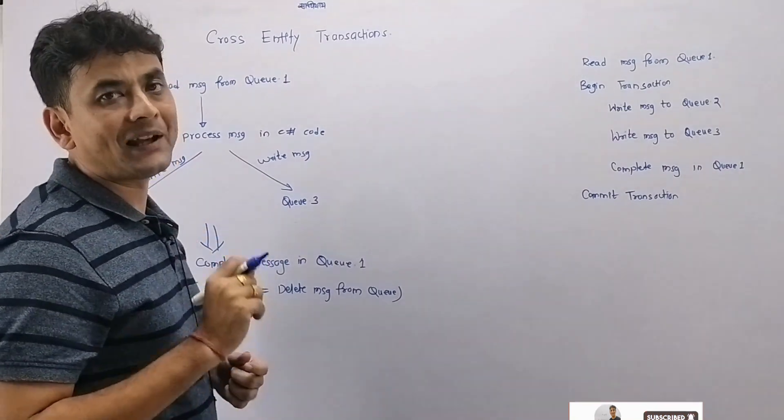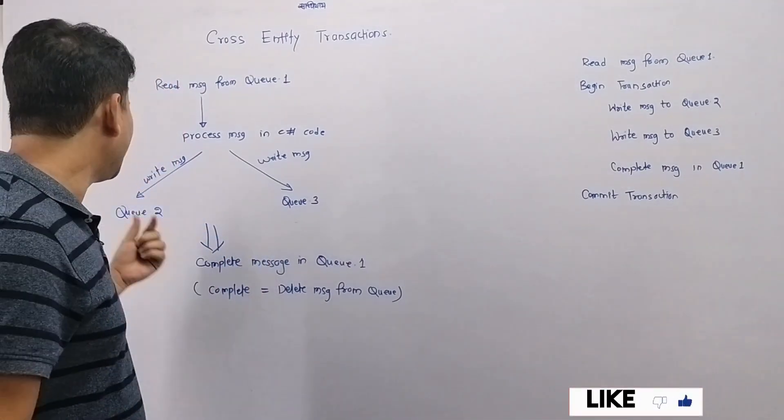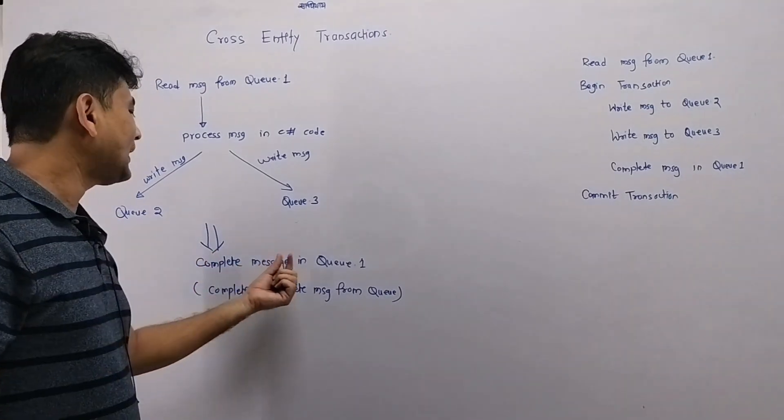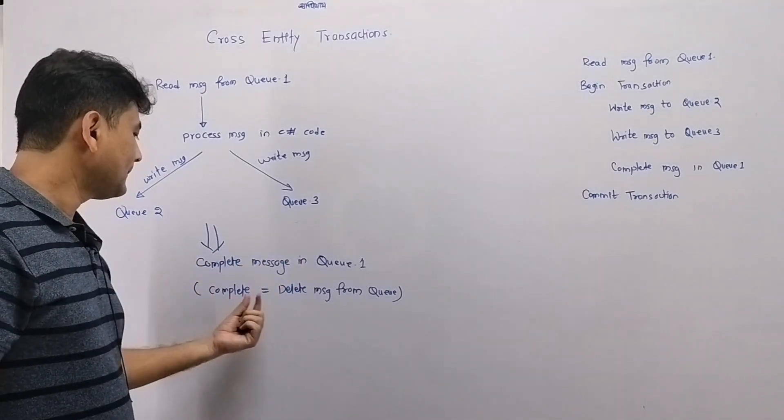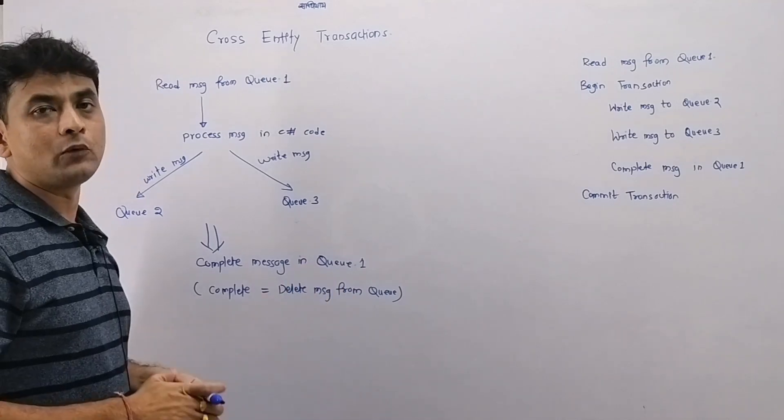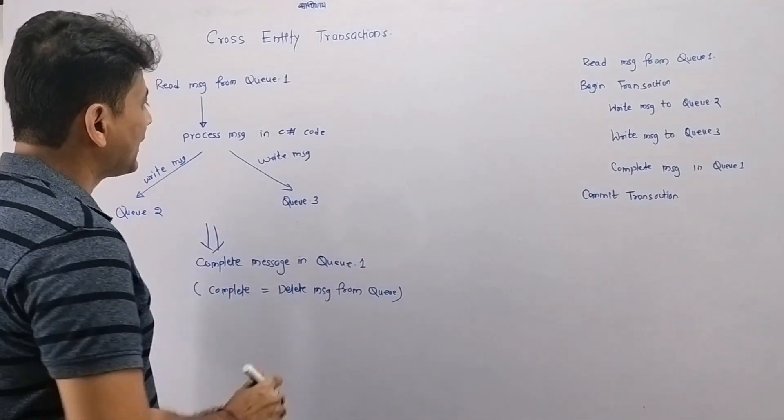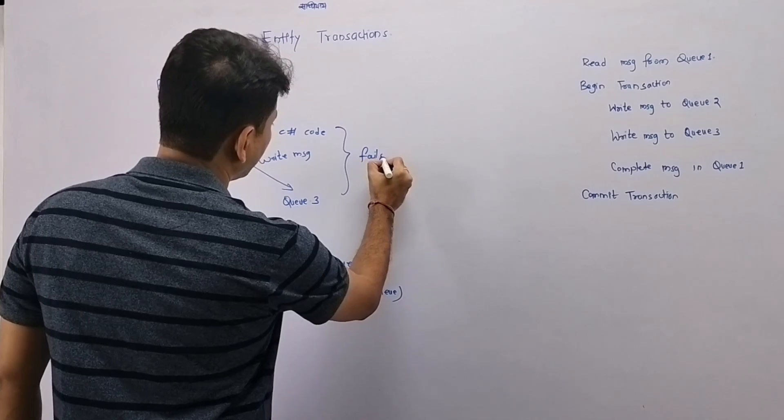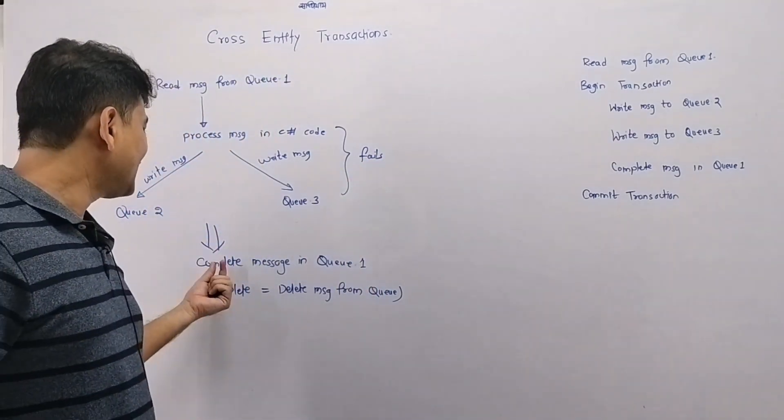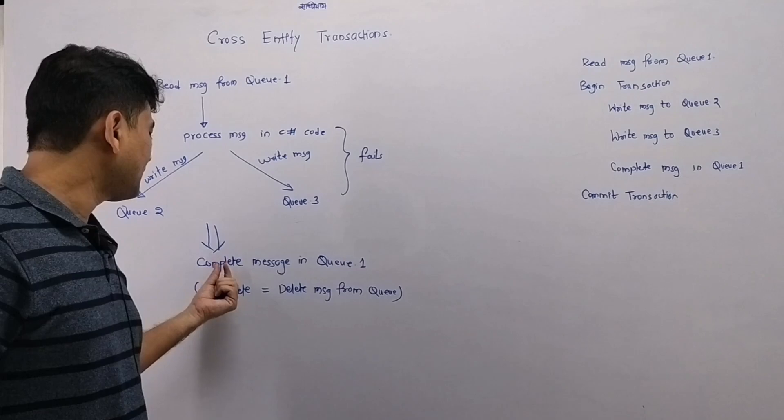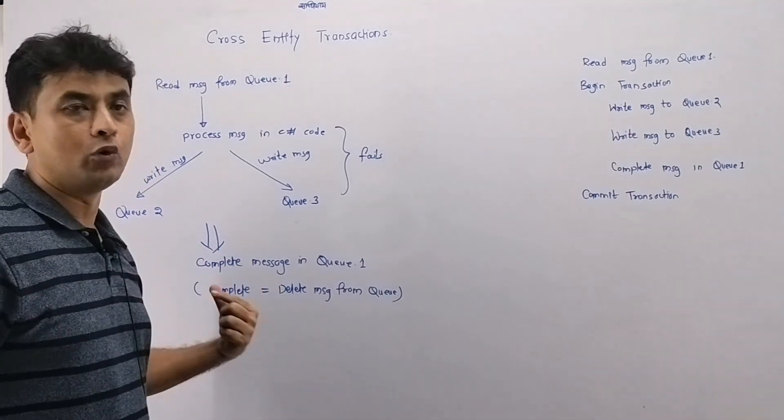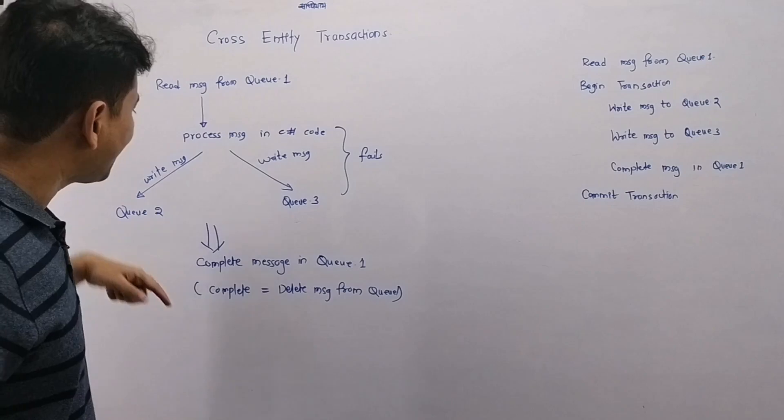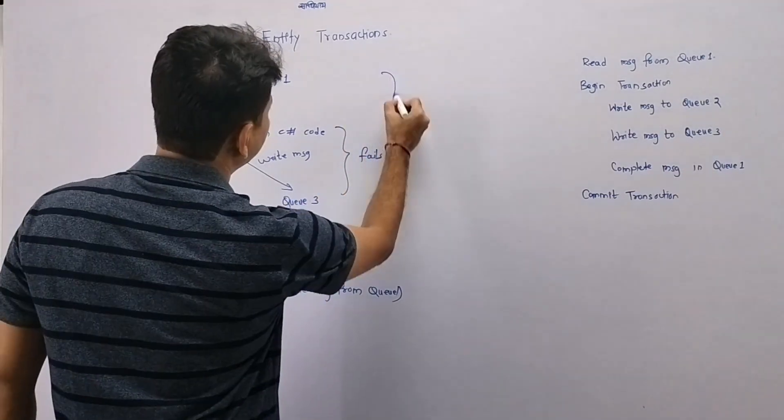Only after that message is successfully written in Queue 2 and Queue 3, only after that you want to complete that message in Queue 1. Complete means that message will be deleted from Queue 1. If somewhere this process fails, then you want to make sure that message should not be completed, that means that message should not be deleted from Queue 1. Now whatever we have discussed here, that is cross entity transaction.